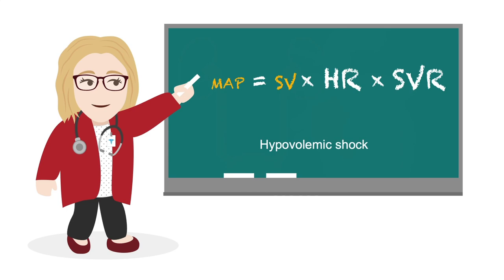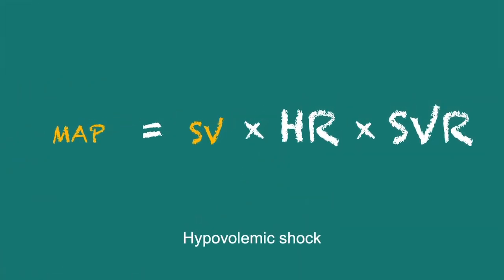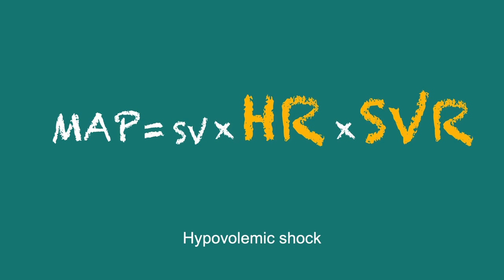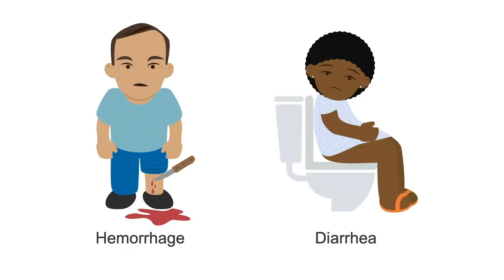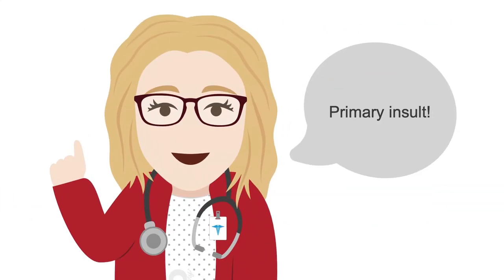We can predict the body's compensatory changes for hypovolemic shock: heart rate and SVR will both rise in an attempt to maintain MAP. It's usually pretty obvious clinically if a patient has massive hemorrhage or diarrhea, so hypovolemic shock is relatively straightforward to diagnose. Just remember, when managing shock, you must start with the primary insult and then determine the compensatory changes.